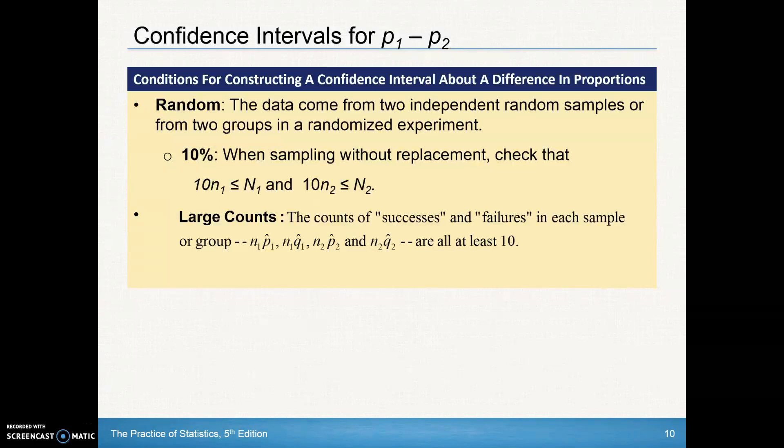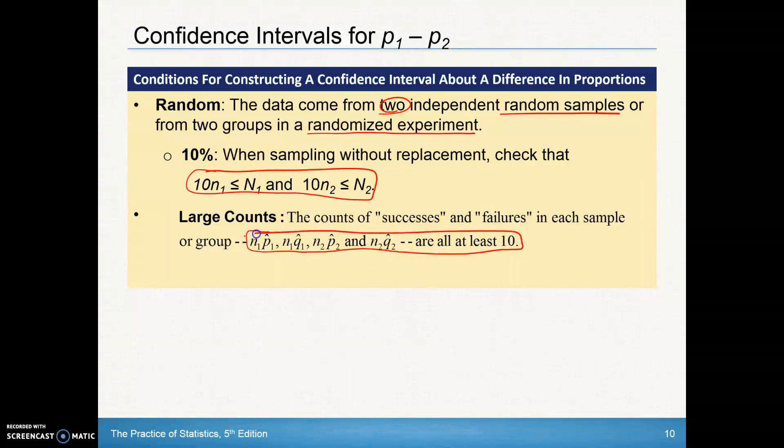In box 2 of our four-step process, we want to make sure we have random samples for each of the two, or at the very least, a randomized experiment that the treatments were assigned randomly. We still want our 10% rule for independence. And we'd have all the n times p's and n times q's being greater than or equal to 10 to establish normality.